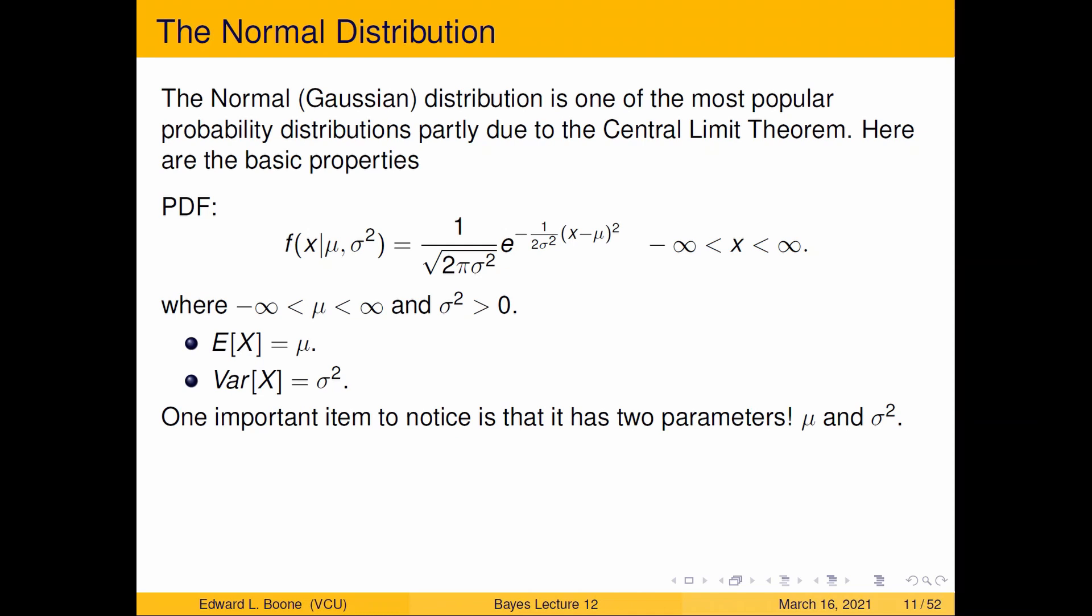So the Gaussian distribution or the normal distribution is one of the most popular probability distributions, partly due to the central limit theorem. I'm not really going to talk about the central limit theorem right now for lots of reasons, but I want to focus on what we do know. So what we do have is a PDF here. So this is the probability density function for it.